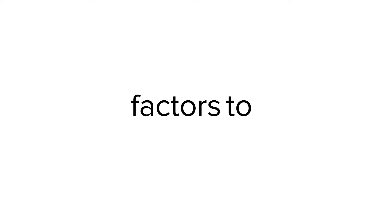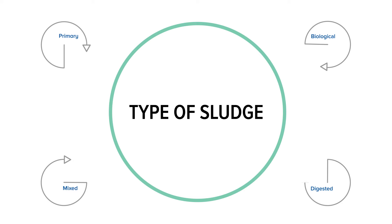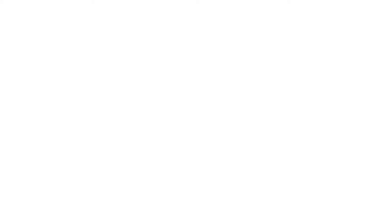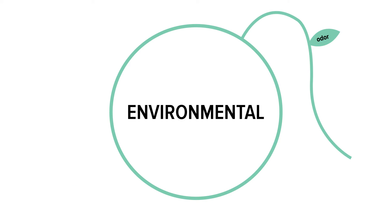The factors to be considered when selecting a dewatering technology: the first is the type of sludge, the volume, and the characteristics of the sludge to be dewatered. You also need to consider environmental factors such as odor or chemical exposure to the operator, or noise.